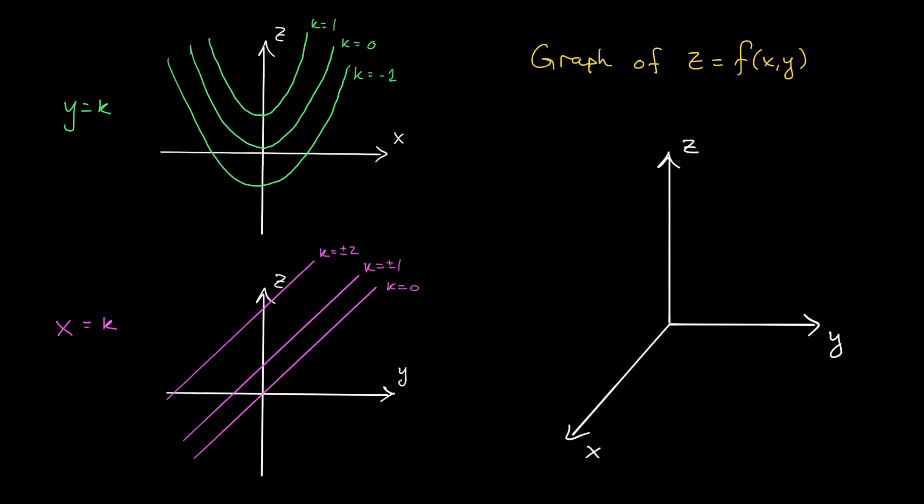Let's pick one of our vertical traces to build the frame for our 3D graph. Now, you might think that the lines are the best way to go here. After all, they're much simpler than the parabolas. However, the lines might be a little bit deceptive here. Instead, I'm going to go ahead and build my frame using these parabolas that I get by slicing in the y-axis. And in the final graph of the function, I'll show you where these lines can be found.